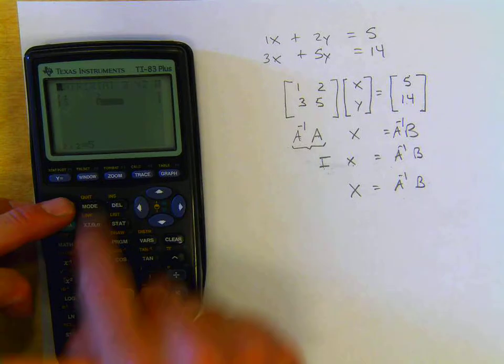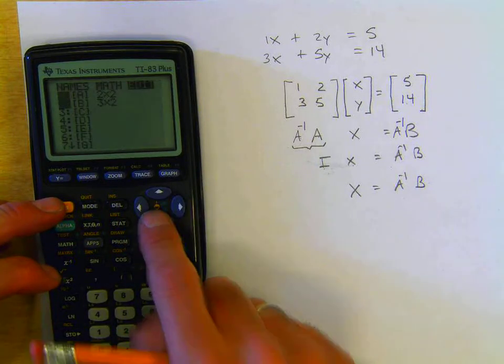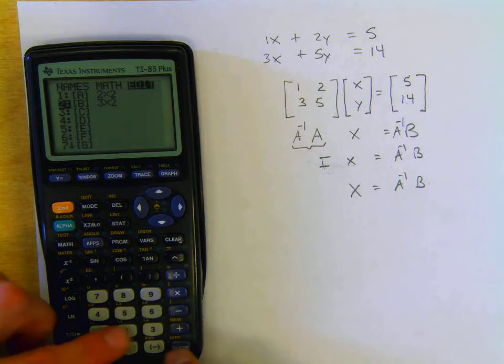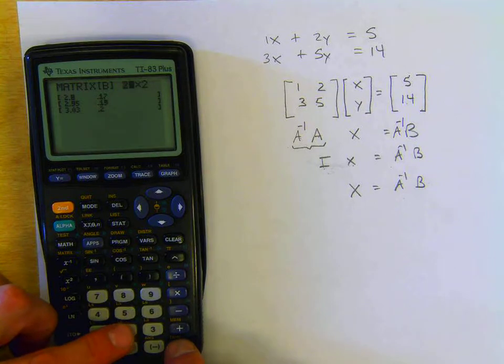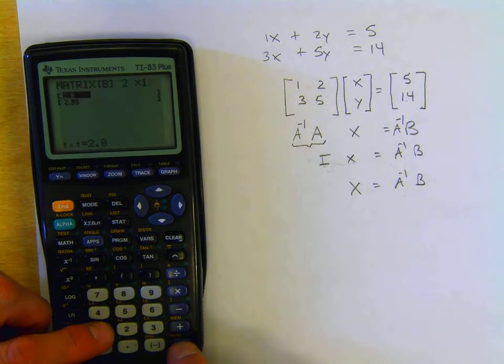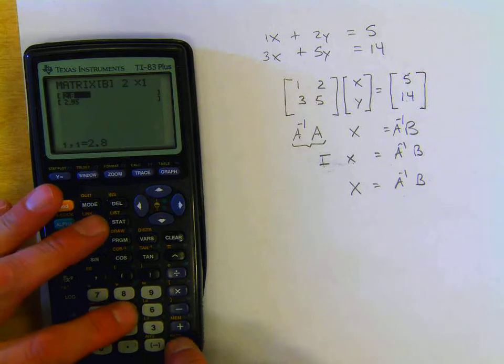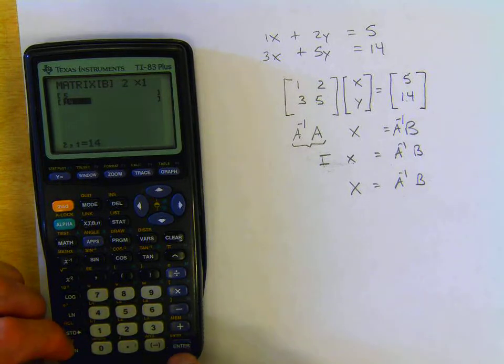We're going to quit. Go to matrix B. Matrix B is a 2 by 1, two rows, one column, and the elements are 5 and 14.